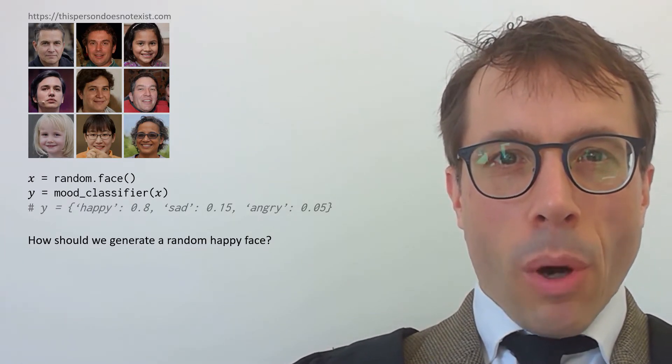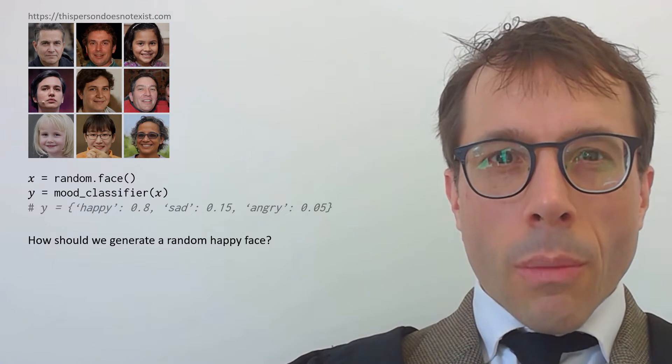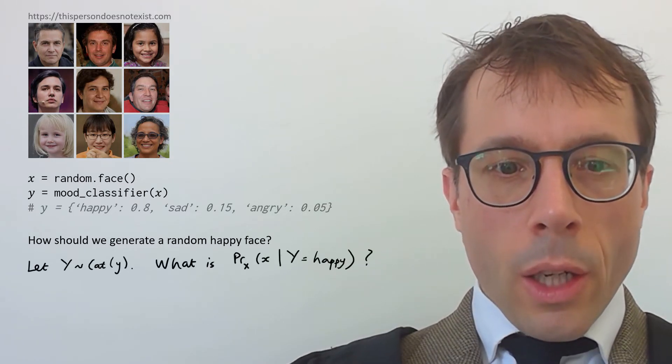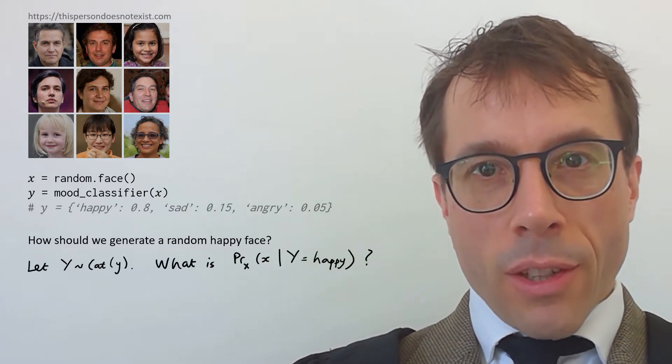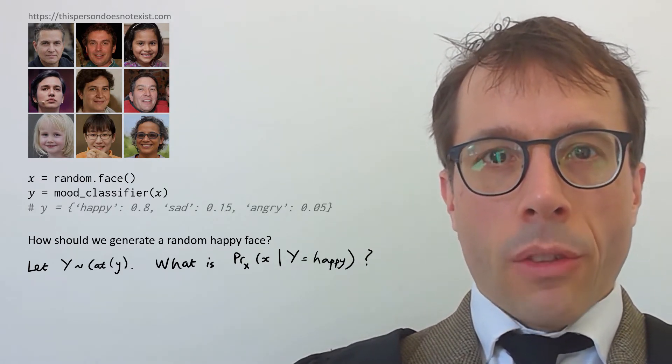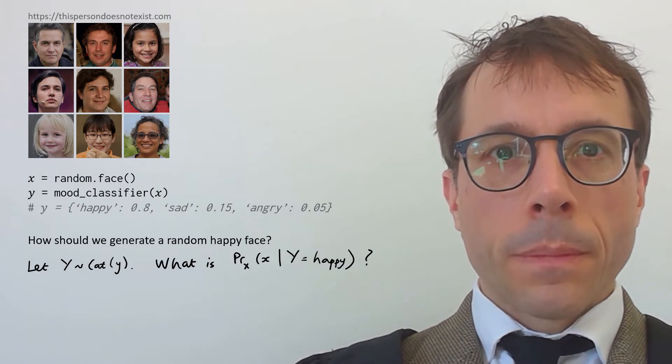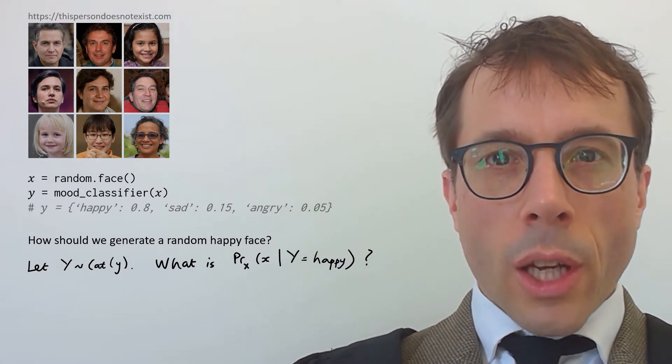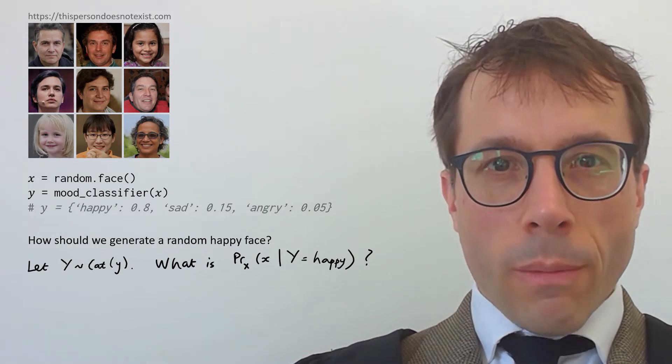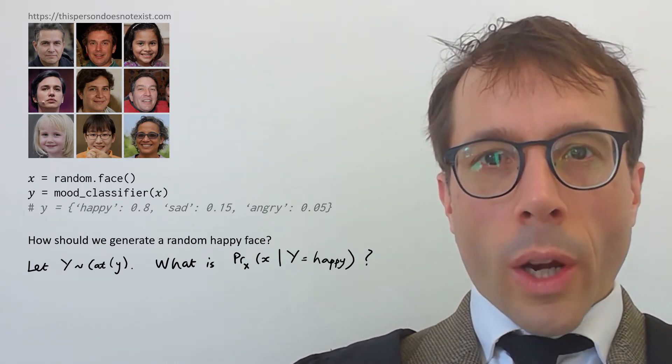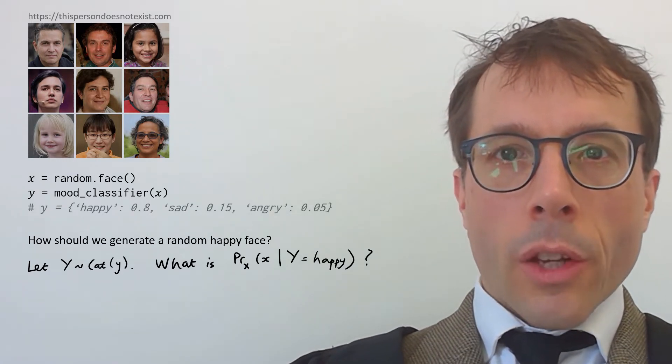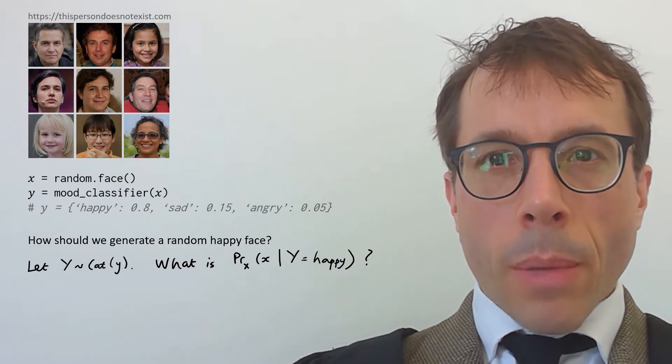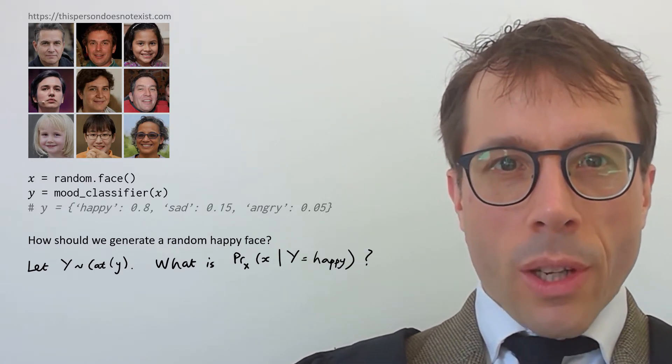Let's try and be clever and think like a probabilistic modeler. We might say the mood classifier returns a vector of probabilities. So let's define a discrete random variable y, which takes value happy with probability 80% in this case, sad with probability 15%, and so on. This, by the way, is called the categorical distribution. Then we can interpret the question as asking for a conditional probability. If big X is a random face, we just want the conditional random variable x conditional on y equals happy. In terms of the likelihood function, we want the likelihood of an arbitrary face little x conditional on y equals happy. Bayes' rule tells us how to work out a conditional likelihood. So we're done. We've solved the problem.